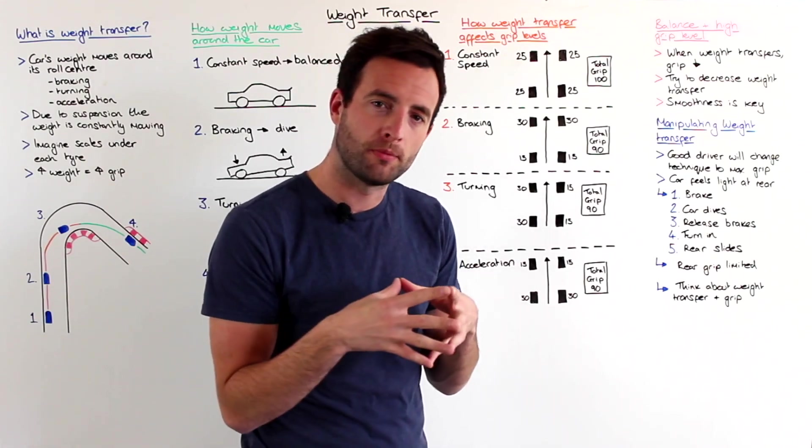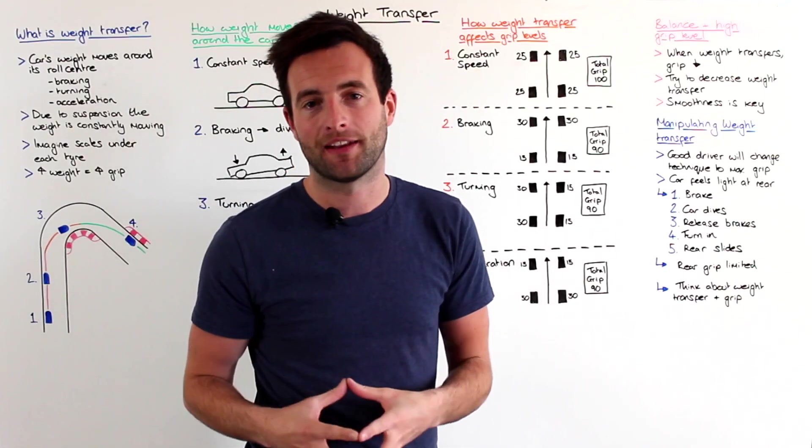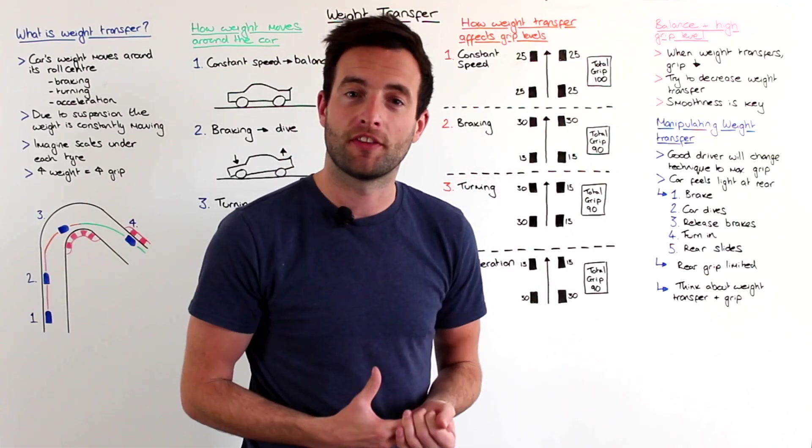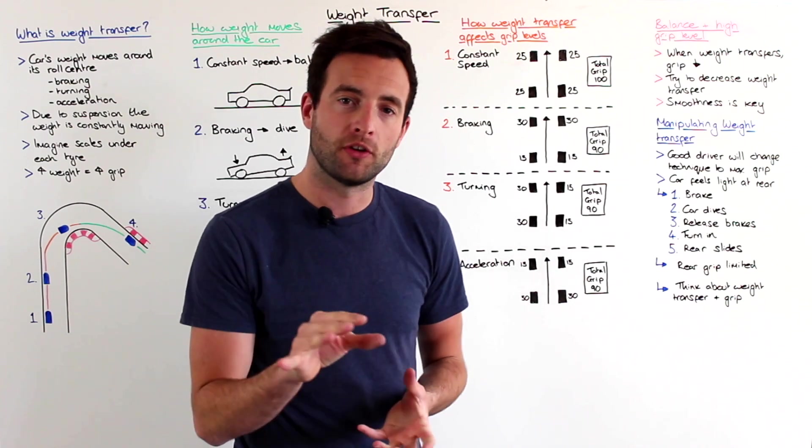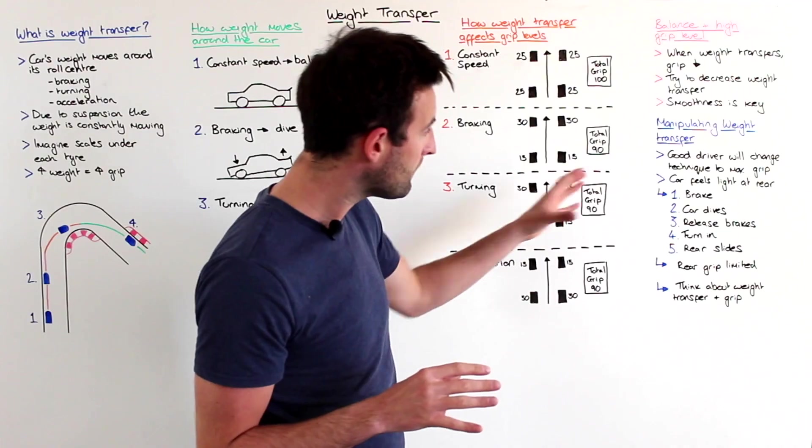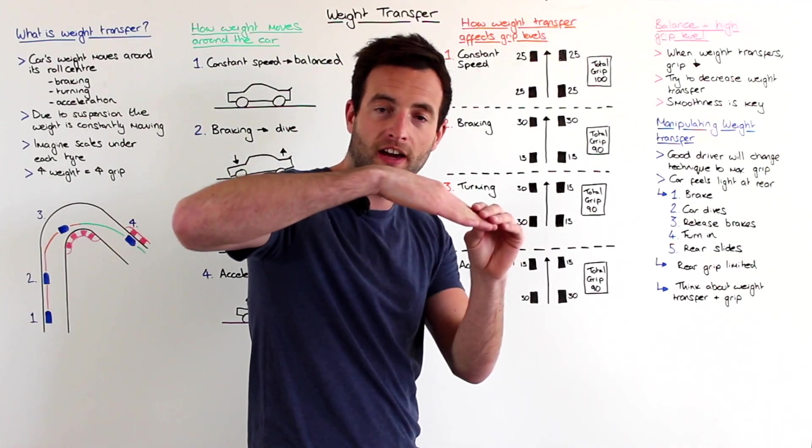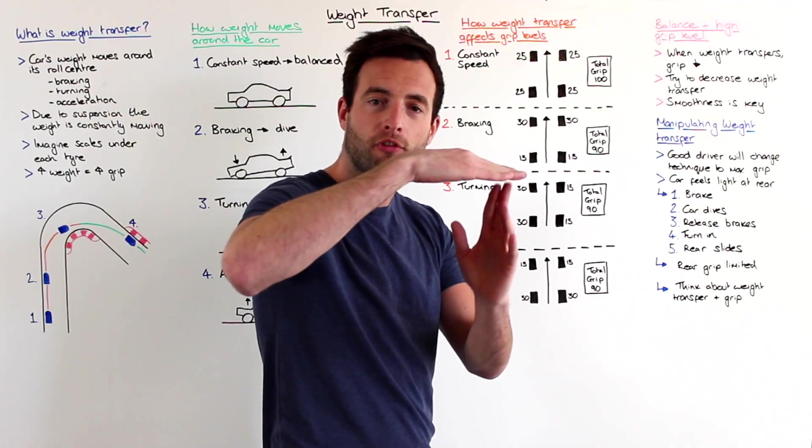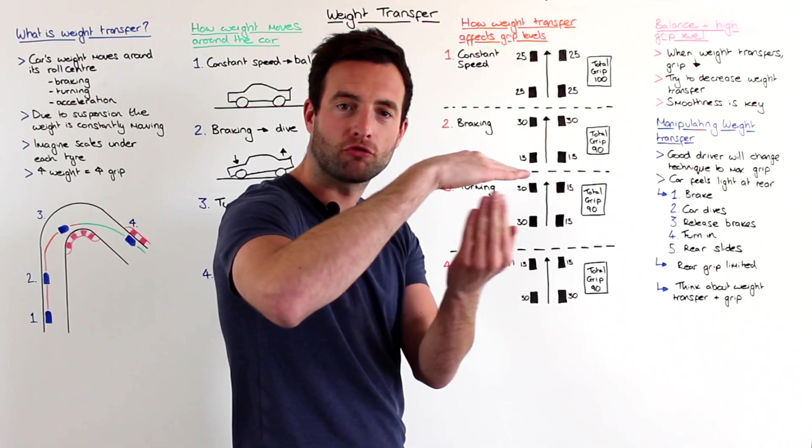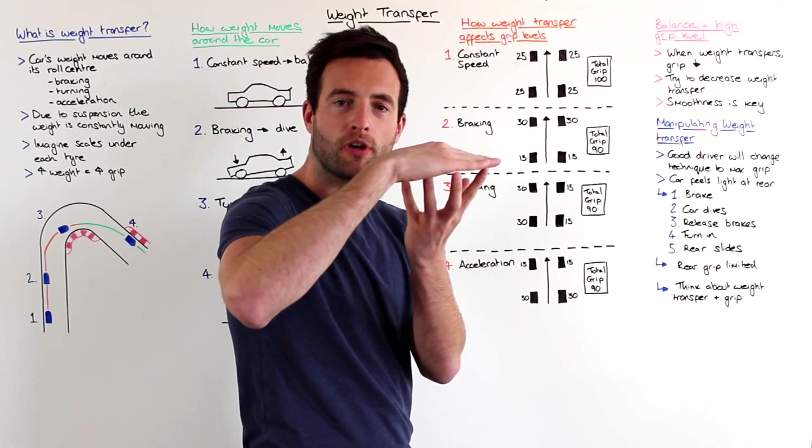So, a good driver will not only be smooth, but they'll also change their driving style depending on the balance of the car to try and shift the grip around to get the most out of the tire at all phases through the corner. So, to better explain this, let's give you a direct example. So, imagine we're coming down to a corner, we get on the brakes and the front of the car dives. We then come off the brakes and the front of the car sits up again. We turn the car into the corner and hopefully we've got a well-balanced grip level around the car. That's why we get off the brakes, so we transfer some of the grip to the rear of the car again. And we turn the car into the corner and then accelerate back out of the corner.